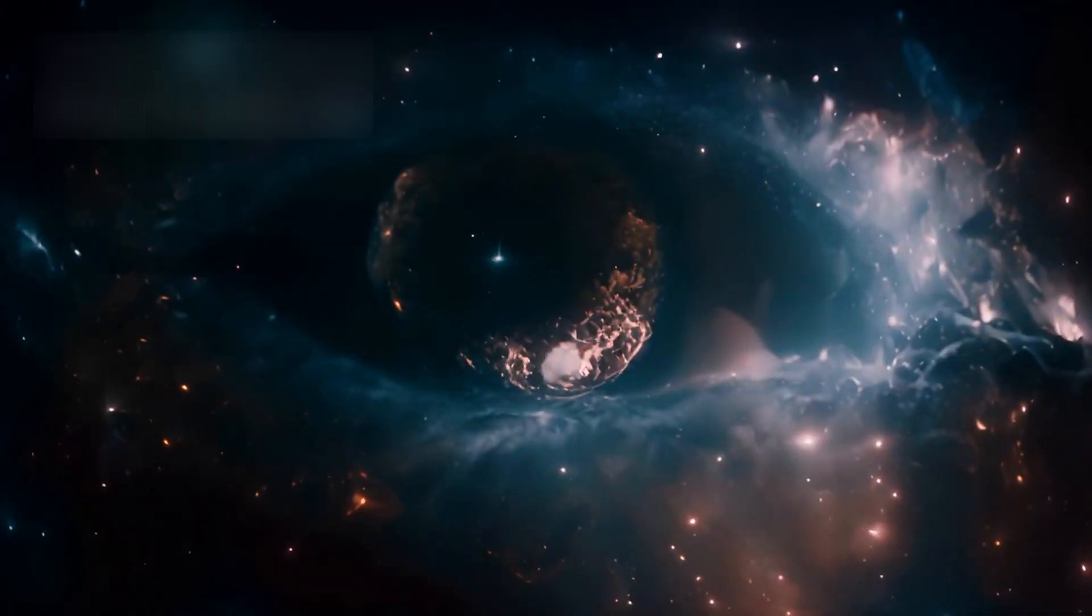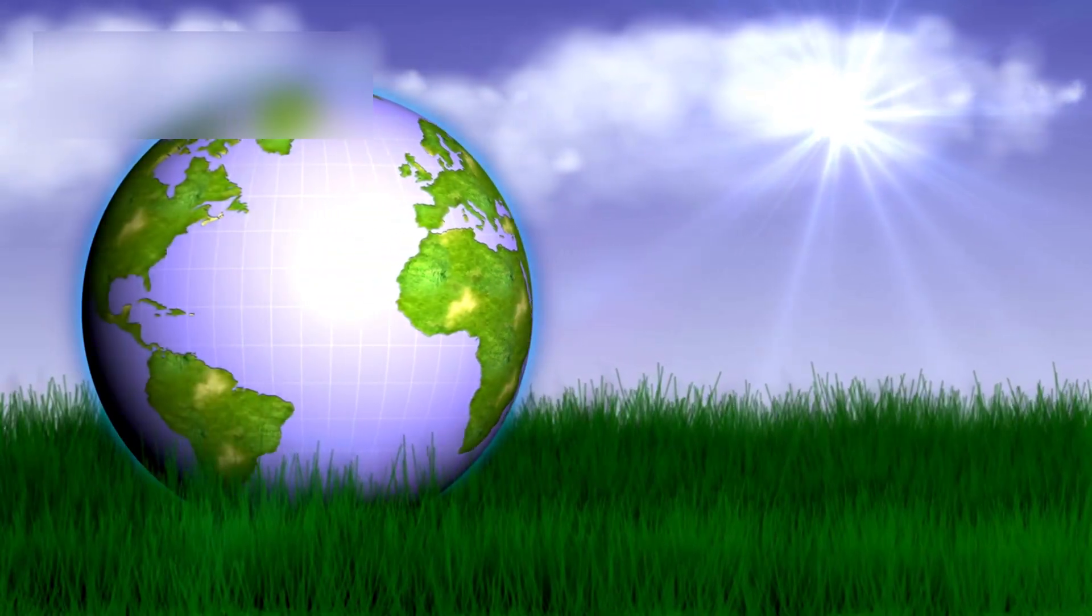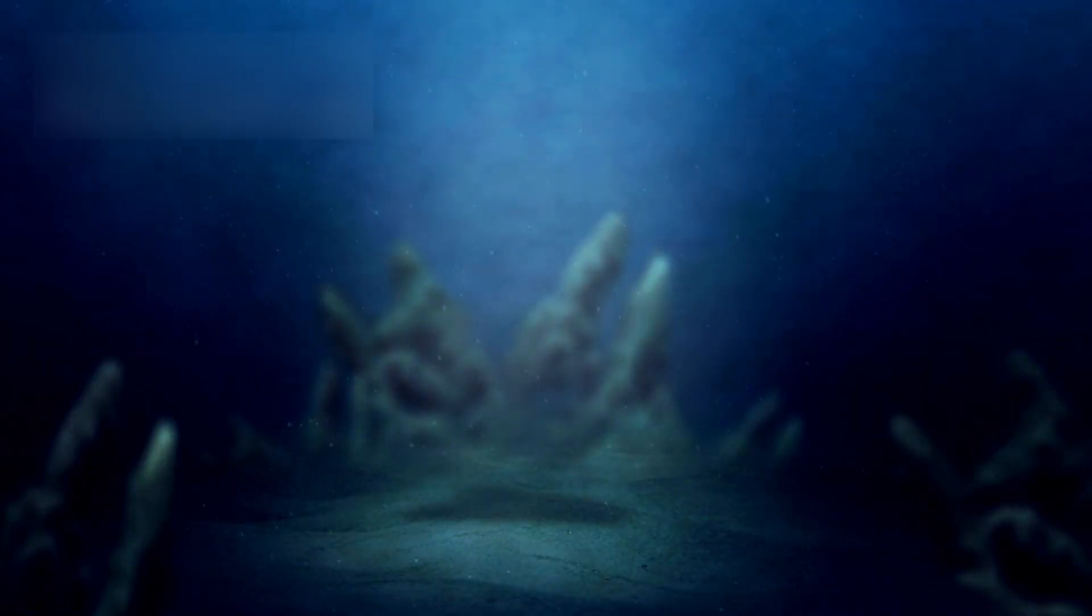Yet, caution is necessary. K218b is not Earth. Its diameter is 2.6 times greater, and it may contain vast high-pressure icy layers beneath its surface. If oceans do exist there, they might be extremely deep, chemically unusual, or subjected to pressures that make life, as we understand it, difficult.